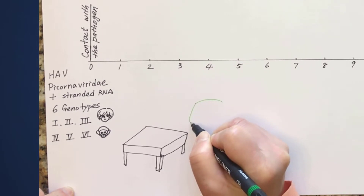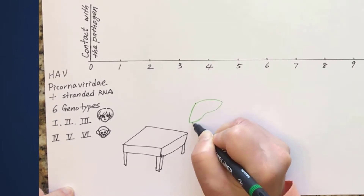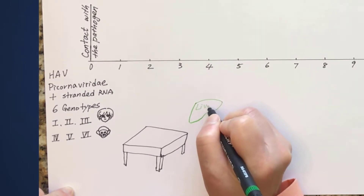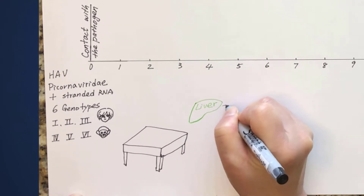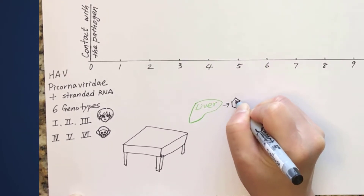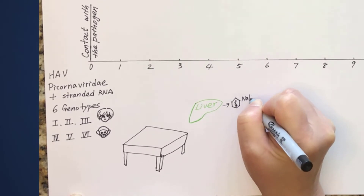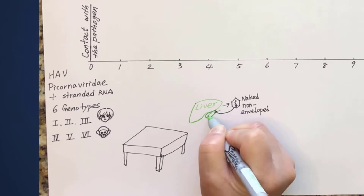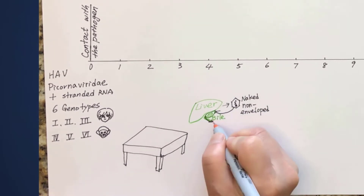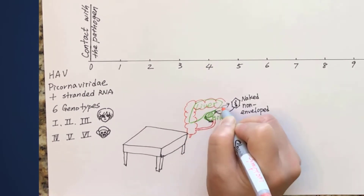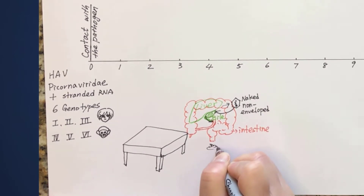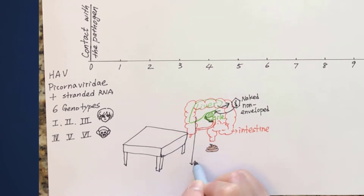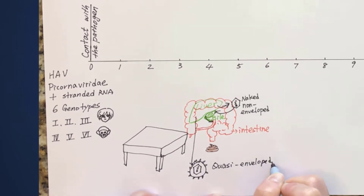Once entering the host's body, the virus goes to the liver, using the hepatic cells to replicate and assemble many more new viruses. There are two variants of hepatitis A virus. One variant is a naked, non-enveloped virus, which is secreted into the bile and enters the intestine and is shed into the stool. The other variant is a quasi-enveloped virus that is found in the infected person's serum.